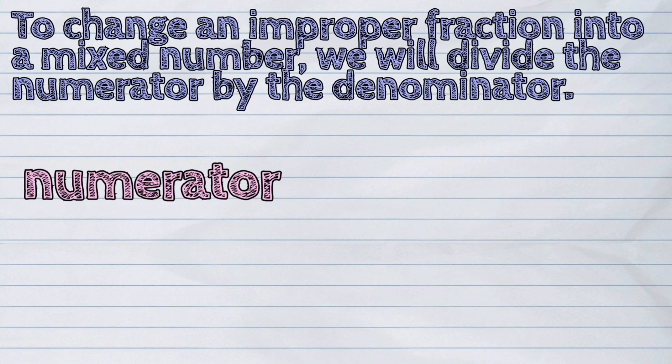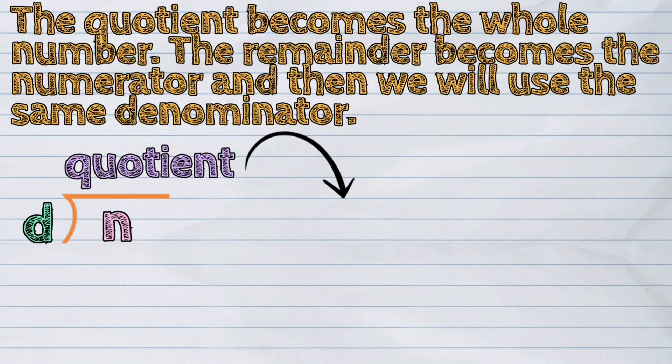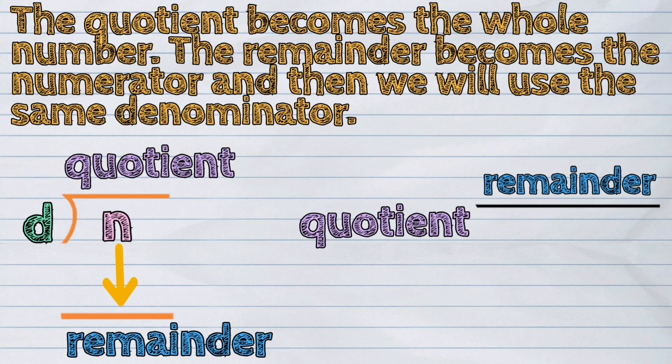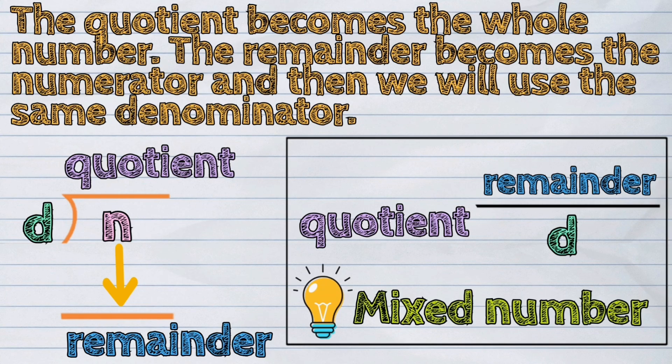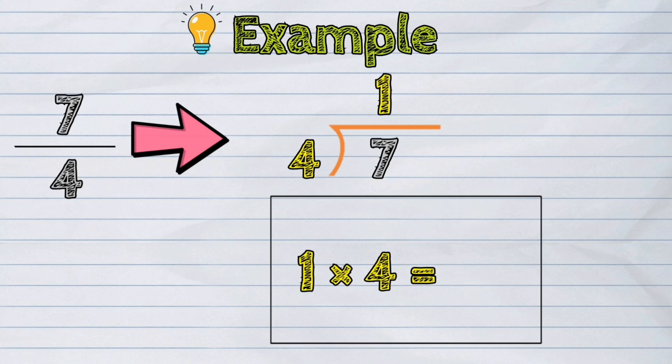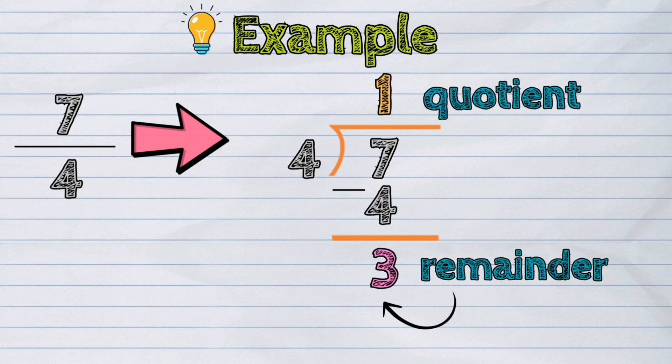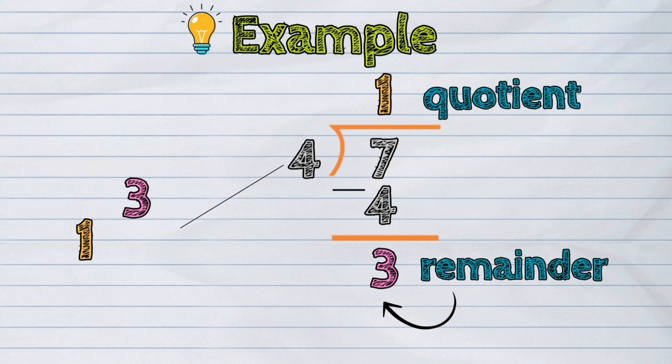And that was how we changed improper fraction into a mixed number. Again, we divide the numerator by the denominator. The quotient becomes the whole number. The remainder becomes the numerator. And then we use the same denominator.